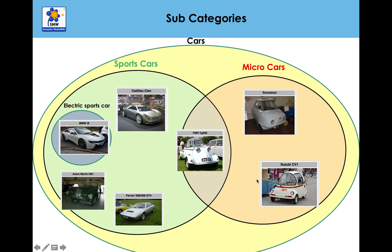We also showed that you didn't have to exclusively add one category — you could also have a car that is both a sports car and a micro car. We also showed you subcategories: by creating a category and then making it part of another category, it becomes a subcategory of that. That's exactly what we did with sports cars — we put them into the category of cars and they became a subcategory of cars.